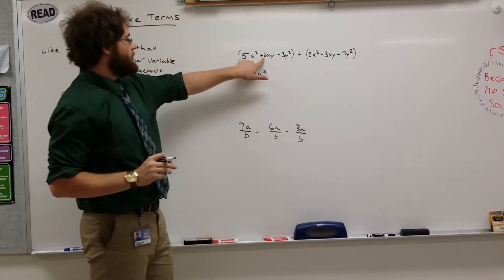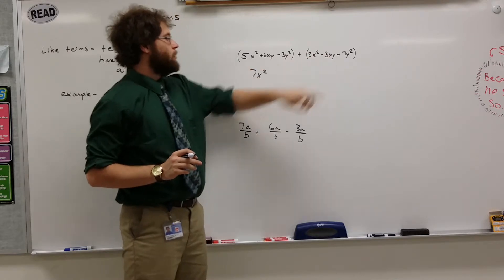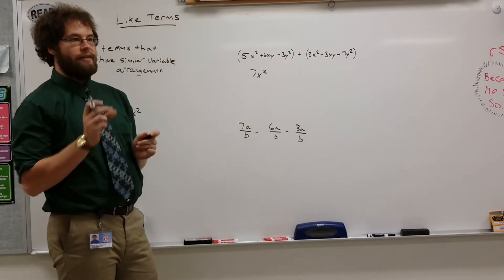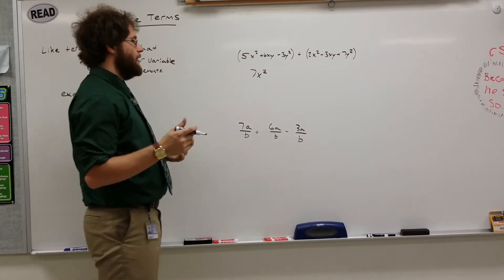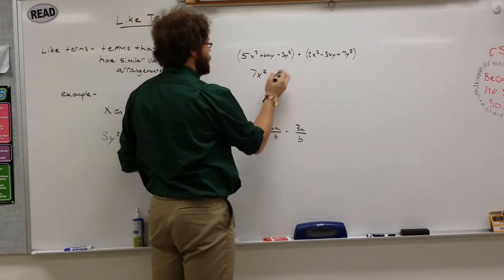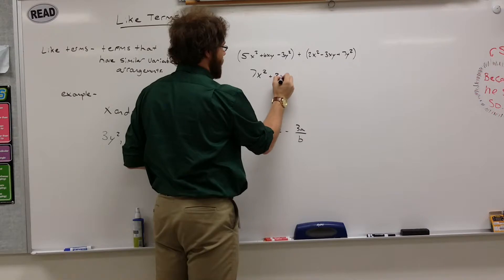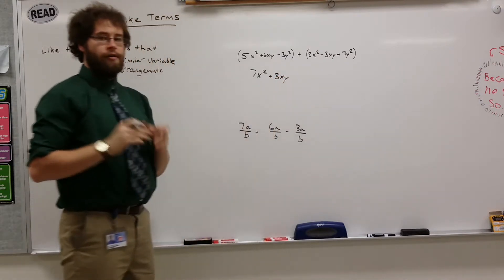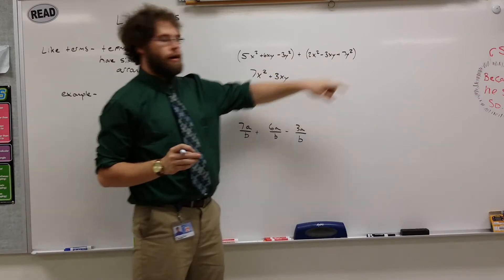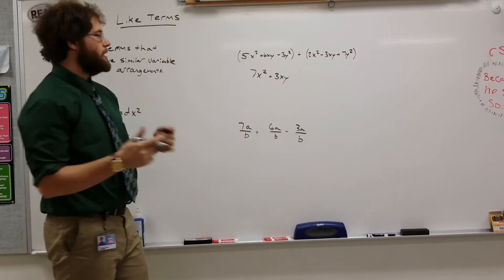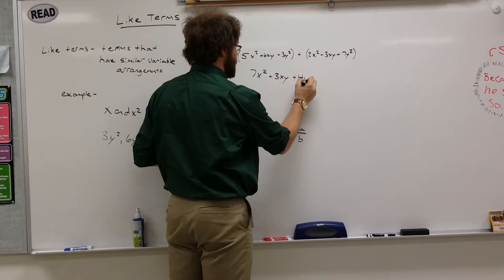6xy and negative 3xy are also like terms. They have xy as their variables. So you can also add them. 6xy minus 3xy is 3xy. Finally, we have negative 3y squared and 7y squared. Those are also like terms. We can add those and we'll get 4y squared.